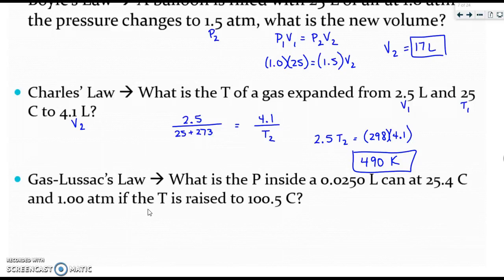This problem relates just pressure and temperature but also includes a volume. The volume is extraneous information and does not matter. We need to go ahead and convert our temperatures to Kelvin by adding 273 to both of them.